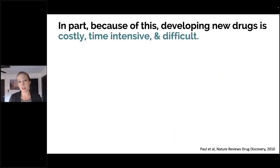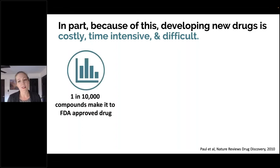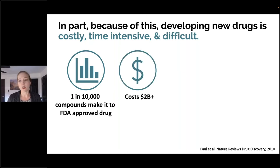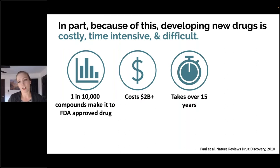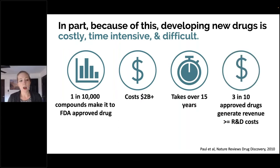Because of this difficulty with translation, we all know that developing new drugs is costly, time intensive, and difficult. One in 10,000 compounds that start will actually make it all the way through the process to an FDA approved drug. Each drug is estimated to cost about $2 billion to develop. It traditionally takes over 15 years. Only about three in 10 approved drugs really generate revenue that covers above and beyond the research and development costs.